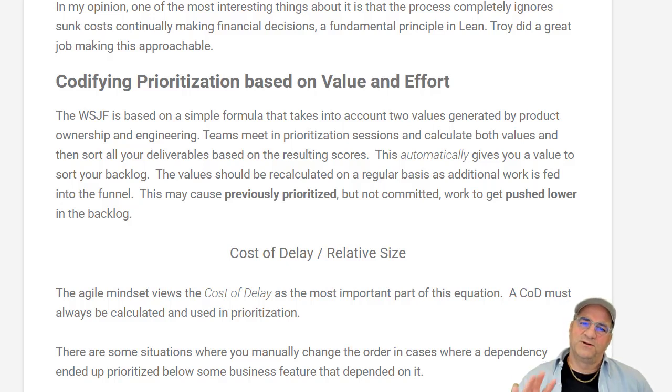So the net is, what we do is we calculate the cost of delay. What's the value? It's what's the value to the business and what's the timeliness it needs to be, and you divide that by the relative size, and that's the complexity and the amount of work, kind of like a combined version of that. And basically, you just calculate that for your entire backlog.